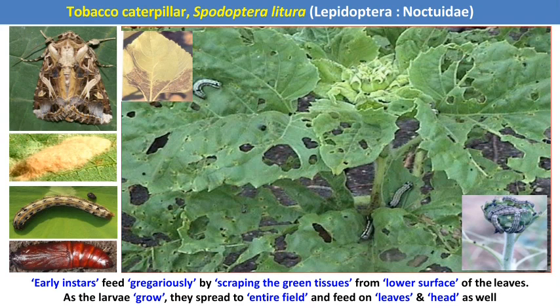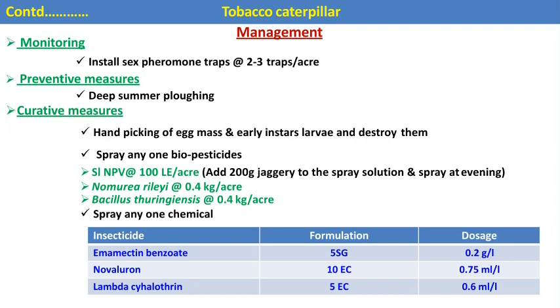The next pest is the tobacco caterpillar, Spodoptera litura — a polyphagous pest. After mating, the female moth lays eggs in a group or cluster on the surface of the leaves. After hatching, the early instar larva feeds in a group, scraping the epidermal layers, causing whitish mesh on the leaf surface. After subsequent development, the larva attacks the leaves causing complete defoliation. Pupation occurs in the soil.